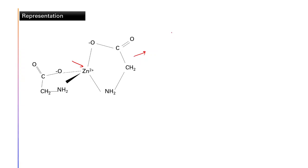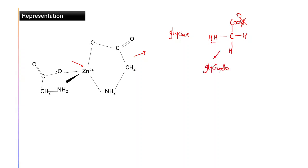Glycine, if you remember, is the simplest amino acid. It has a carboxylic acid group and at the alpha carbon an amine group. When you remove the H, you get a COO⁻ group and this becomes glycinato — a negatively charged ligand. It complexes Zn²⁺ from both sides, and both sides are different. The geometry is tetrahedral, as evident from the wedge and dash notation.